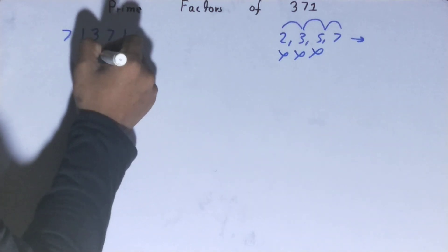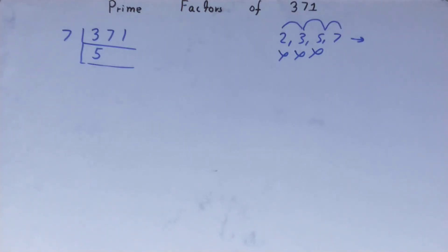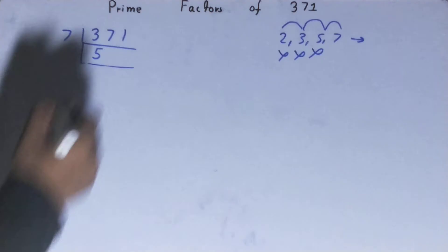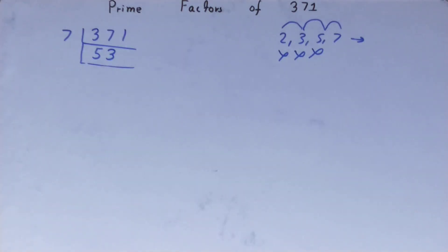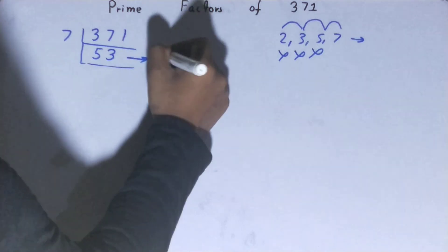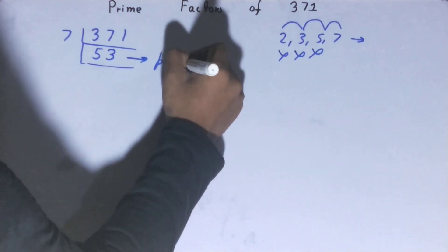7 fives are 35, 7 fives are 35 to 1, 7 threes. Okay, now this 53 is further not divisible by 7 and also not by any other prime number, because 53 is itself prime.